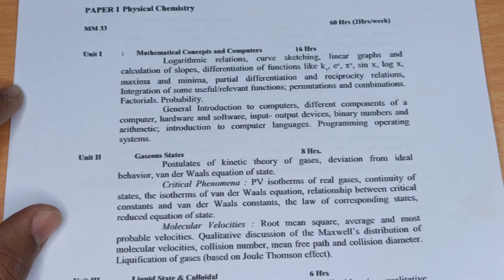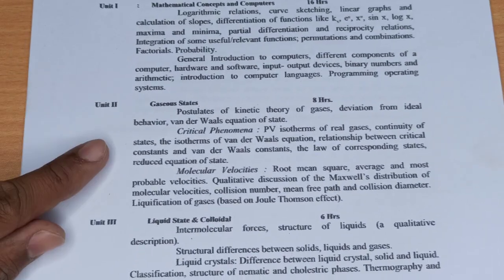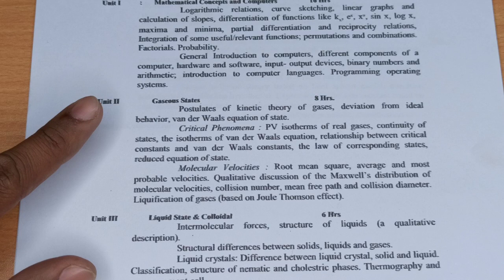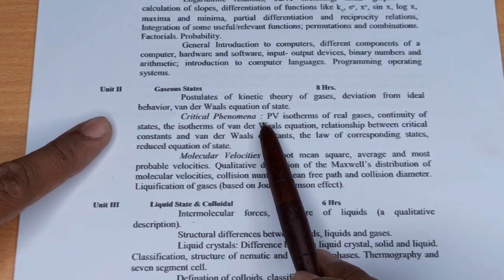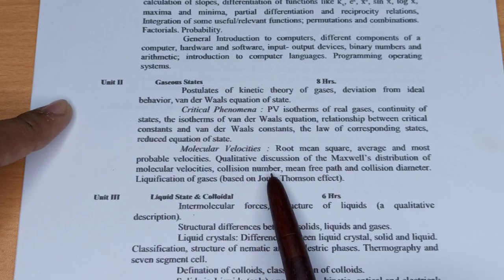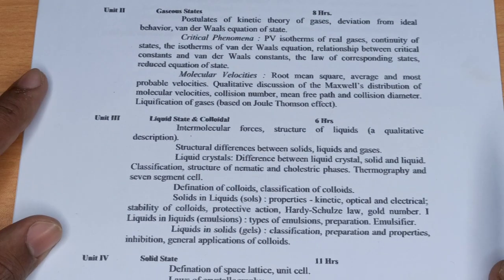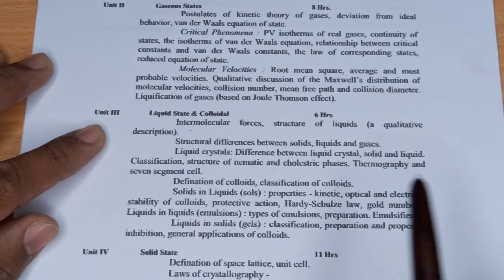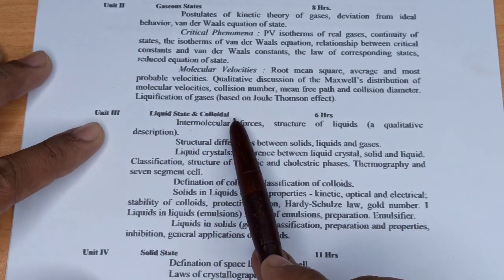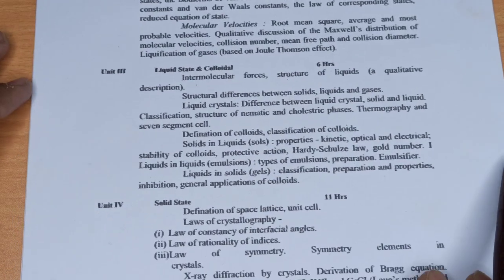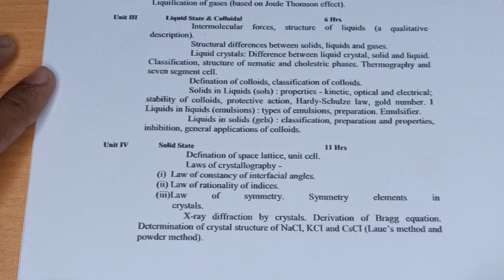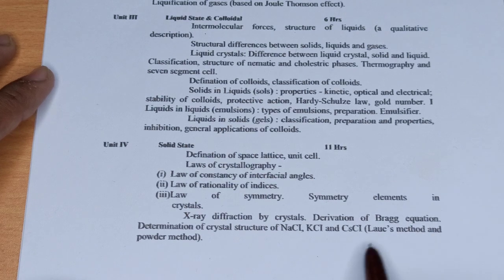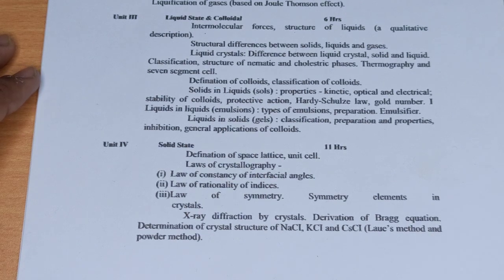Second unit है Gaseous States, जिसके अंदर kinetic theory of gases, critical phenomena और molecular velocity पढ़ेंगे। Third unit है Liquid State and Colloidal। Fourth unit है Solid State — इसमें Bragg's equation वगैरा सब syllabus में है। आप detail में सब topics description से देख सकते हैं।